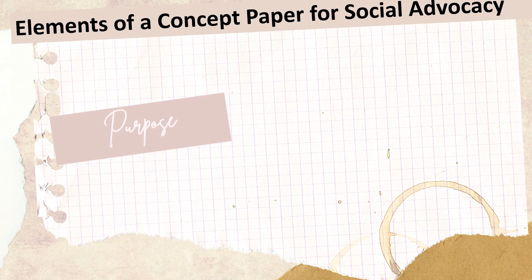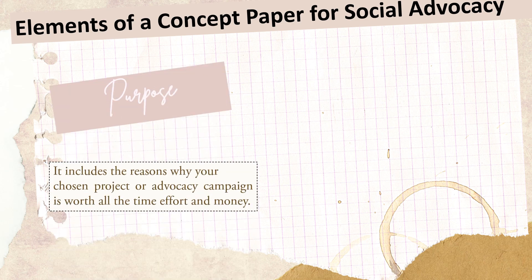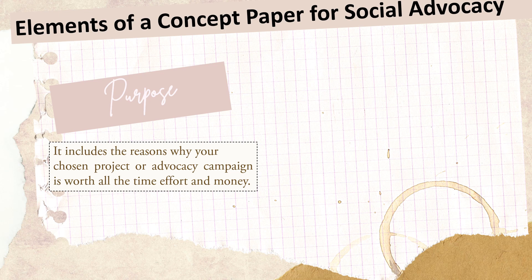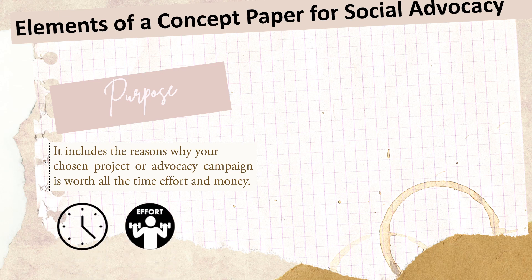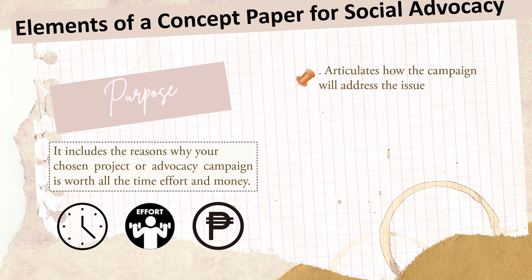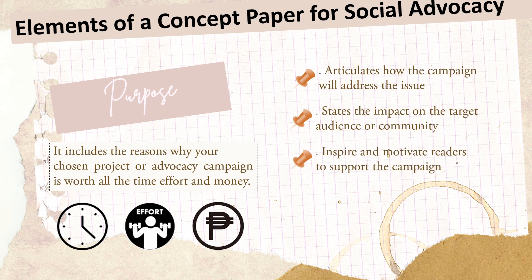The next element is purpose. This element of concept paper includes the reasons why your chosen project or advocacy campaign is worth all the time, effort, and money. To write a compelling purpose statement for a social advocacy concept paper, it is crucial to understand the problem or issue that the campaign seeks to address. The purpose statement should articulate how the campaign will address the issue and what impact it will have on the target audience or community. It should inspire and motivate readers to support the campaign and take action to help achieve its goals.